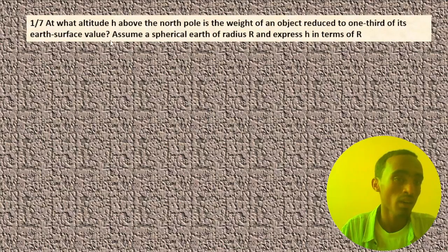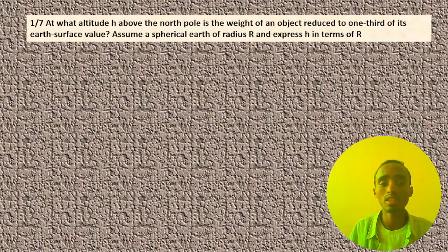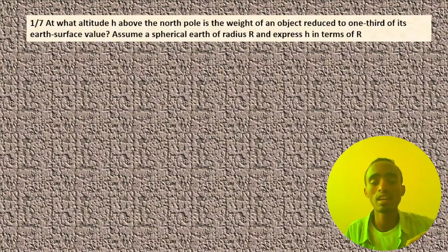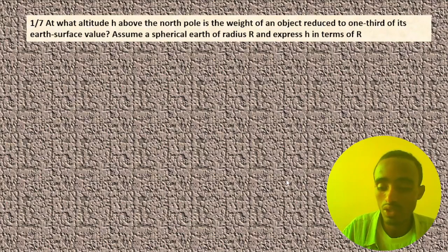As you can see here, on the earth's surface, we have the object's weight. Above the surface, the radius is increased by h. During this time, our weight decreases. How can we calculate that decreased weight and these concepts? We can solve this problem with this question.